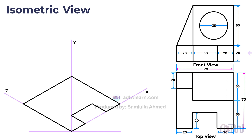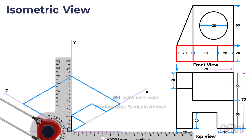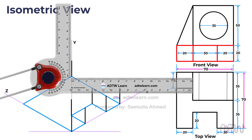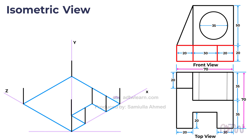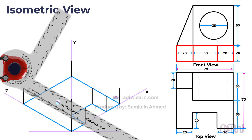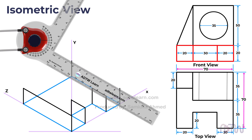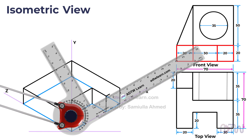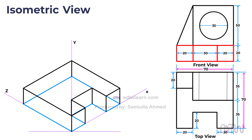Moving on, we notice that the thickness of the base in the front view is 20 millimeters. To incorporate this, draw vertical lines of 20 millimeters from each corner point, then connect the endpoints of the vertical lines to form the base of the object. Once the base is established, we can remove the additional lines that are not visible in the isometric view, resulting in the final isometric view of the object's base.